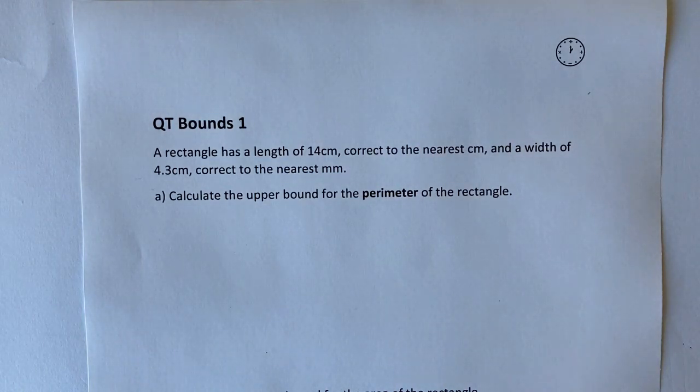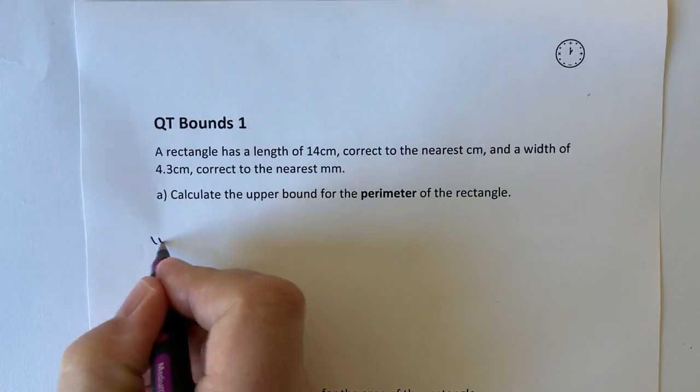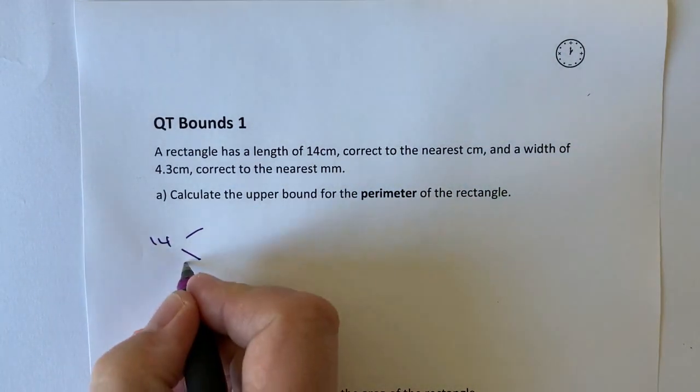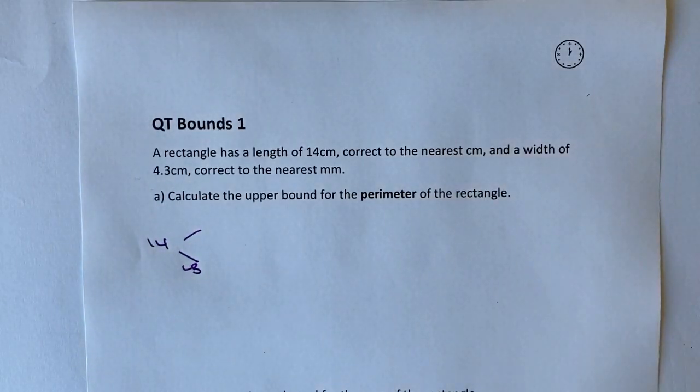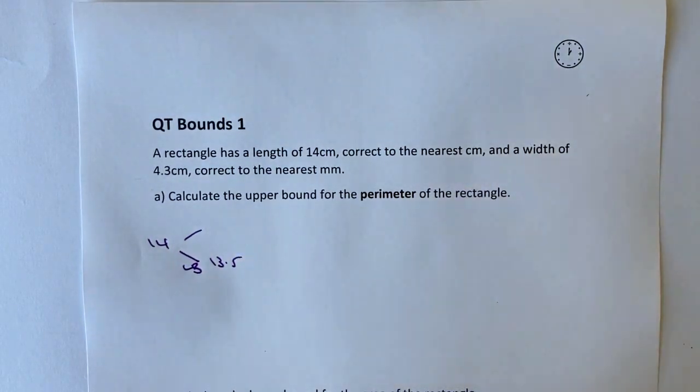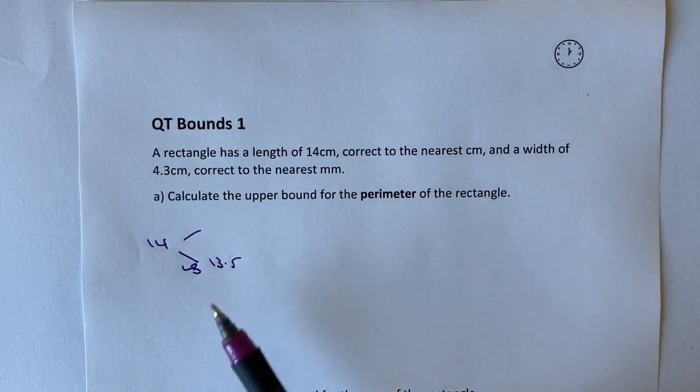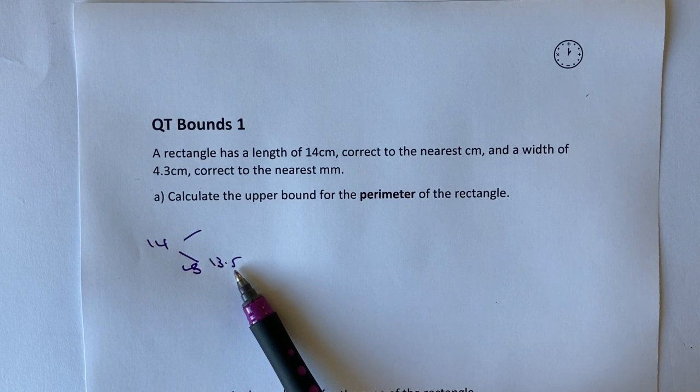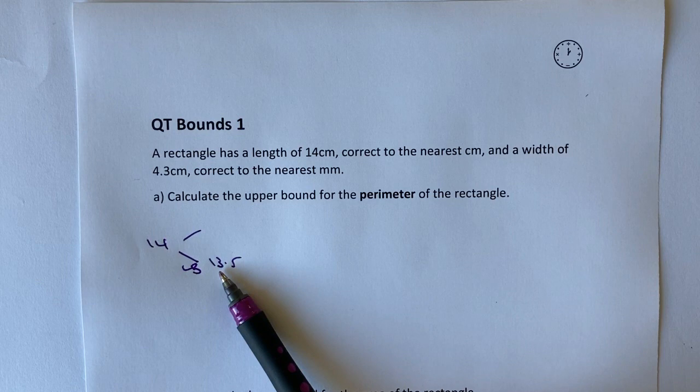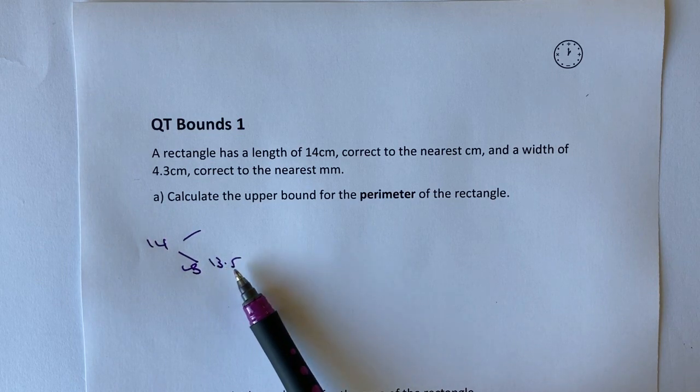So let's just have a look at that first. What we mean is that we have 14, but the lower bound, in other words, the smallest this particular measurement can be is going to be 13.5, because that will be the lowest number, so that if we make this correct to the centimetre, that will then become 14. So this would be the lowest it could possibly be.